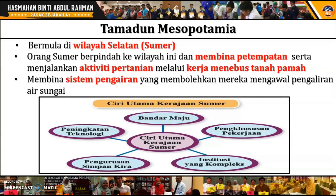Ciri utama kerajaan Sumer menunjukkan ia sudah pun maju. Terdapat perbandaran yang maju, pengkhususan pekerjaan, institusi yang kompleks, pengurusan simpan kira, dan peningkatan teknologi. Ini membuktikan bahawa kerajaan Sumeria sudah mempunyai ciri-ciri tamadun yang telah kita pelajari dalam bab 4 sebelum ini. Sebab itulah Tamadun Mesopotamia merupakan tamadun yang terawal.